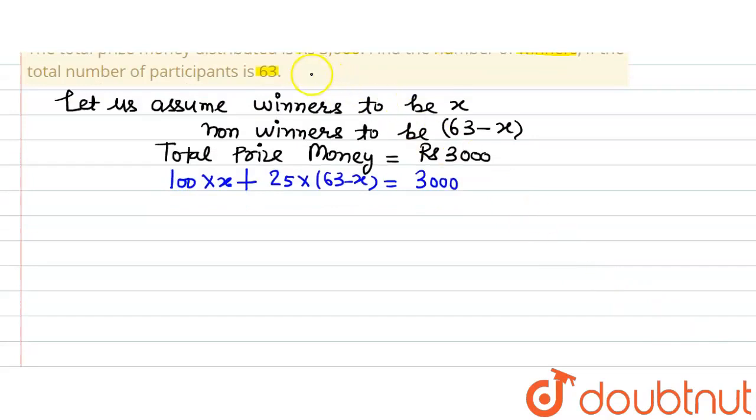X is the number of winners, which we have been asked in the question. So let's do this question. 100 into X is 100X, plus 25 into 63 is 1575 minus 25 into X. 25X is equal to 3000. Now, I am simplifying it further. 100 minus 25X is equal to 75X.